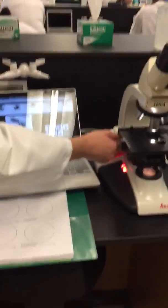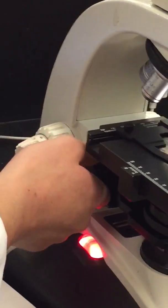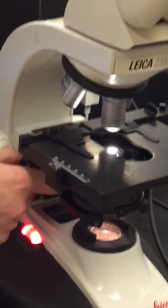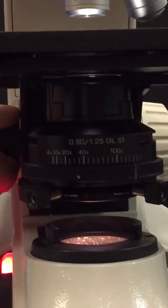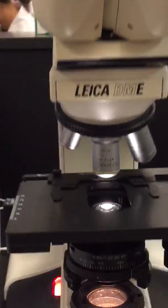This fine adjustment knob right here adjusts the bottom lens so that you'll be able to see your samples either up closer or much further, and it helps you focus in when you look through your ocular lenses so that you'll have a clearer vision of how your samples look like.